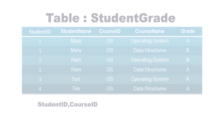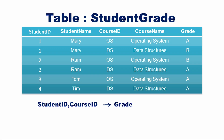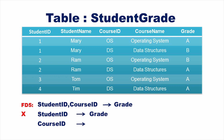Student ID and course ID together determine grade is a functional dependency (FD5). Student ID alone cannot determine grade, so it is not a functional dependency. Similarly, course ID alone cannot determine grade, so it is also not a functional dependency. Hence FD5 is a full functional dependency.